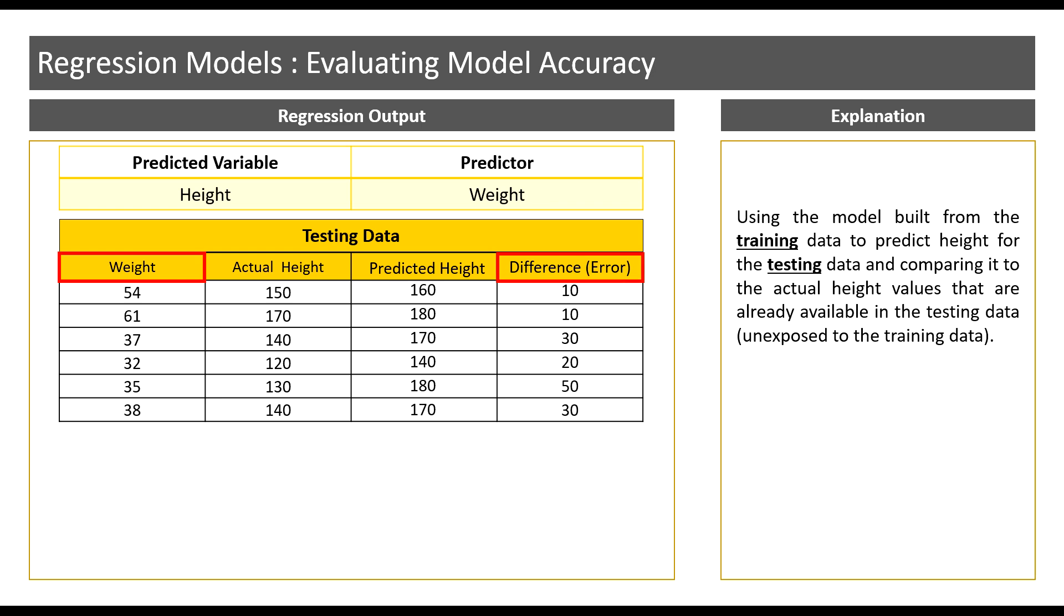Now we will go through each of the error measures. The first error measure is MAD, that is mean absolute deviation. It is calculated as follows: the formula is the sum of the absolute values of all the error terms divided by the number of observations in the testing dataset.